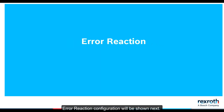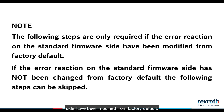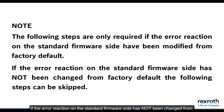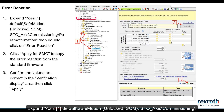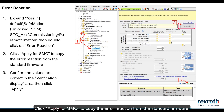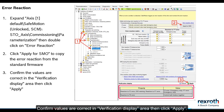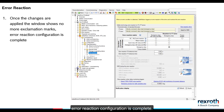Error Reaction Configuration will be shown next. The following steps are only required if the error reaction on the standard firmware side has been modified from factory default. If the error reaction on the standard firmware side has not been changed from factory default, the following steps can be skipped. Expand Axis 1 Default, Safe Motion, Unlocked, SCM, STO Axis, Commissioning, Parameterization. Then double-click Error Reaction. Click Apply for SMO to copy the error reaction from the standard firmware. Confirm values are correct in the Verification Display Area, then click Apply. Once the changes are applied, the window shows no more exclamation marks. Error Reaction Configuration is complete.